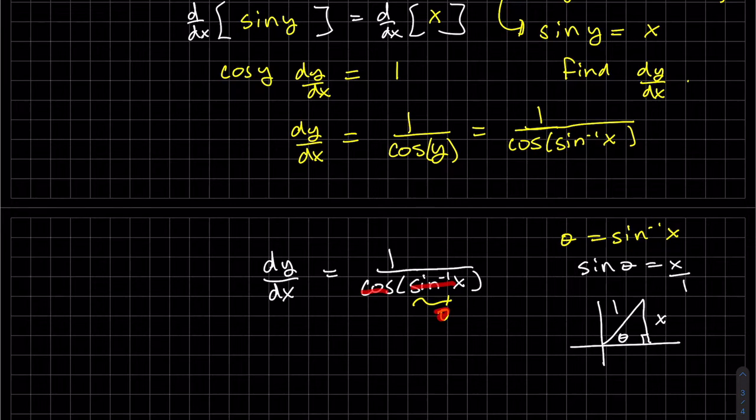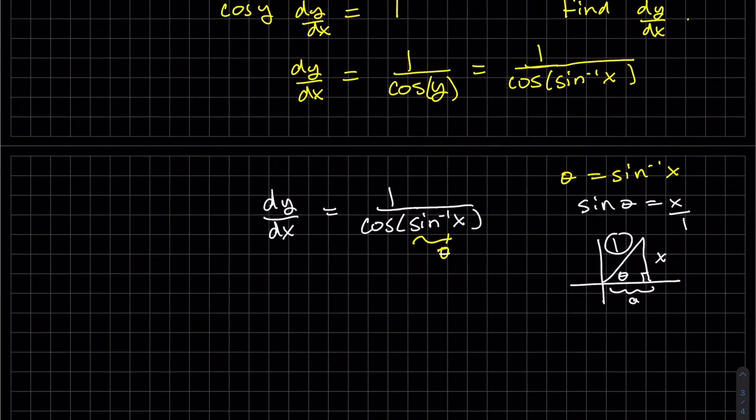We want the cosine of this angle. This angle is theta right there. It's the same. So it's going to be adjacent over hypotenuse. So we need to find adjacent. We'll call that a. We need to get a in terms of x. It's the right triangle.